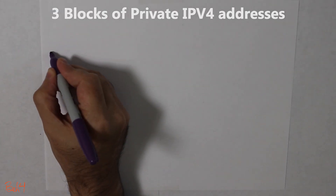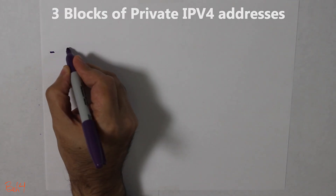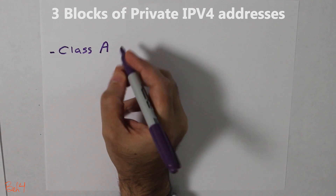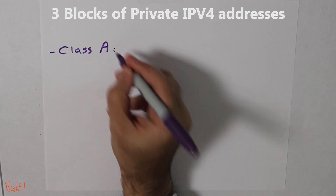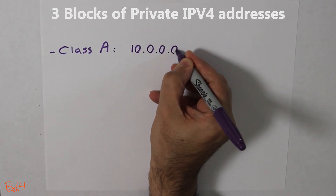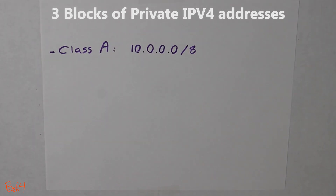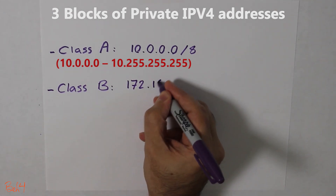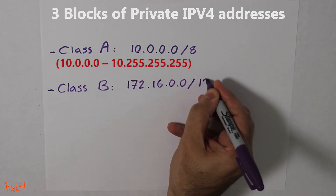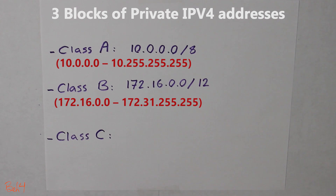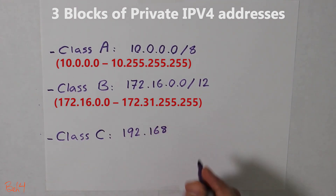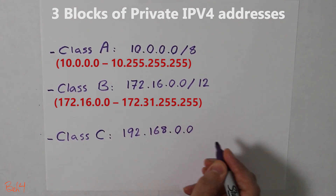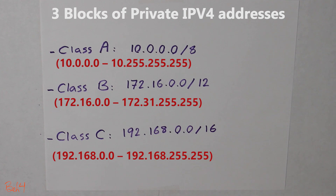There are three different blocks of private IPv4 addresses. Class A is 10.0.0.0/8. Class B is 172.16.0.0/12. And Class C is 192.168.0.0/16. Most wireless routers, by default, use Class C addresses.